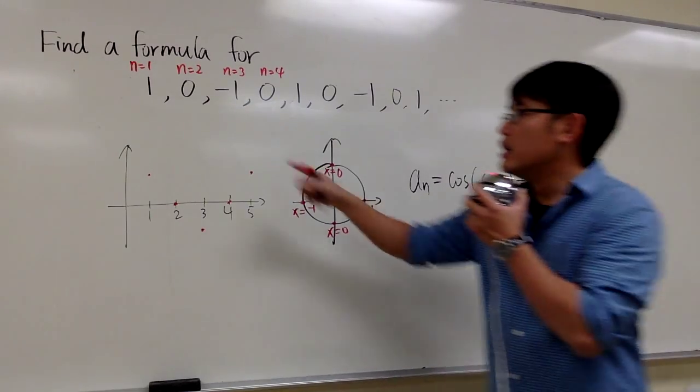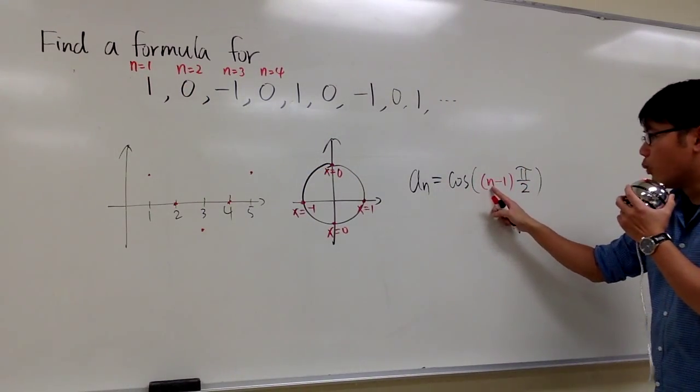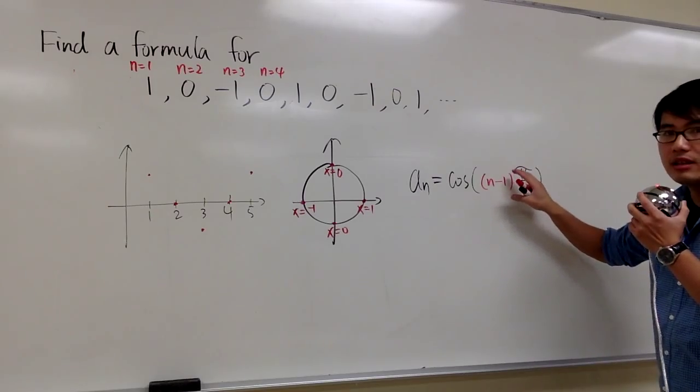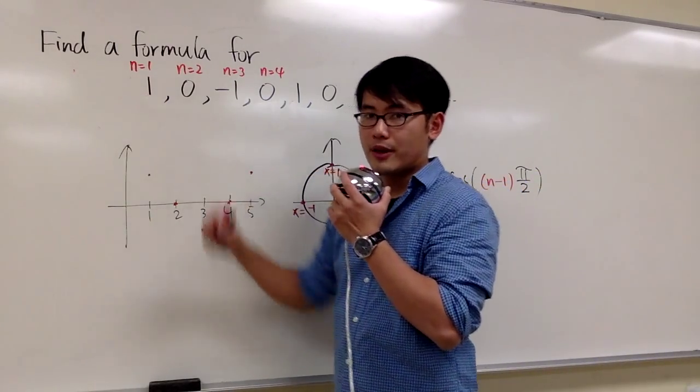And let's do a quick check. If n is equal to 1, I plug in 1 to this n, 1 minus 1 is 0, 0 times pi over 2, we have 0 inside. Cosine of 0 will give us this 1, okay?